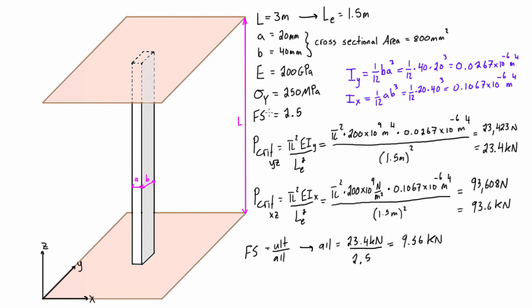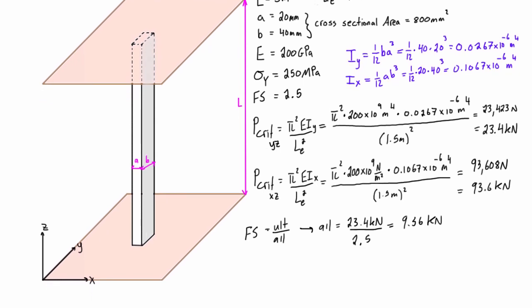So with a factor of safety of 2.5, we can safely support this compressive load of 9.36 kN. Now something that we should do, just like we talked about in the last video, is check that we're not at risk of yielding with this applied load. Let's give ourselves a little bit more space down here.